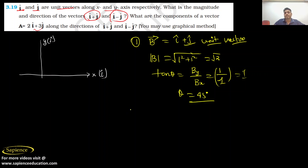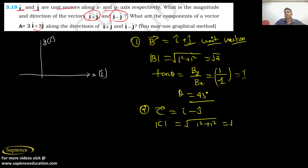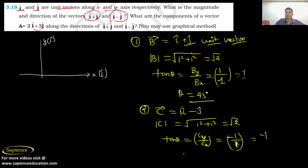Now for part two, let us consider vector C as i-cap minus j-cap. Both are also unit vectors. The magnitude of vector C is root of one squared plus one squared, which equals root 2. For the direction, tan θ equals the y-component divided by the x-component: Cy is minus one and Cx is plus one.